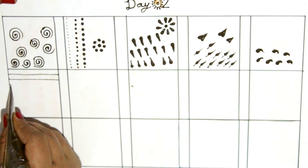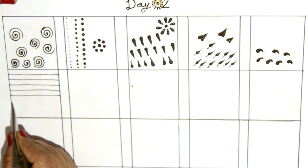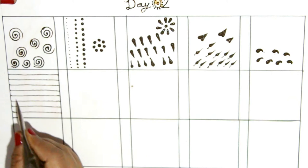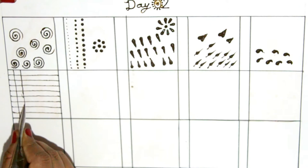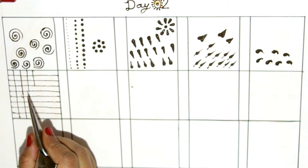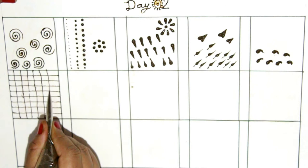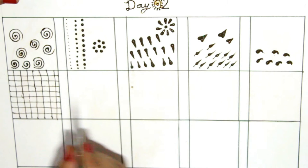Now for the sixth design, we will draw a straight line, first vertically and then horizontally. Making a check which will look like this.